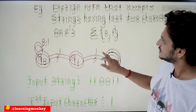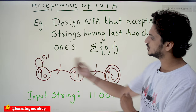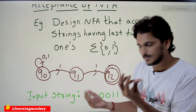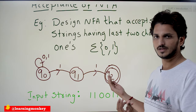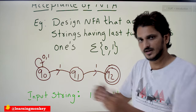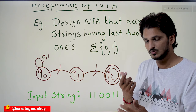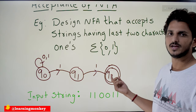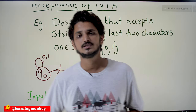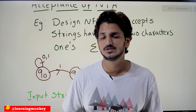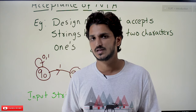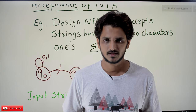That is why we defined our NFA this way — whenever the last two characters are 1, one of the machines will move to the final state and the string will be accepted. Hope you understand the concept of how NFA executes. If you have any questions, please post them in the comment section below. Thanks for watching. If you haven't subscribed to our channel, please subscribe and press the bell icon for the latest updates.